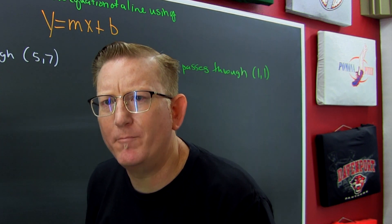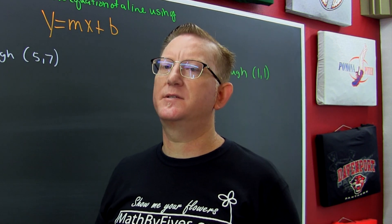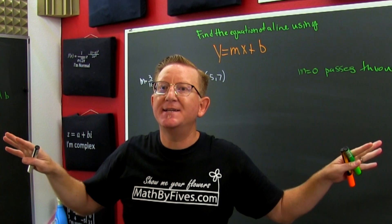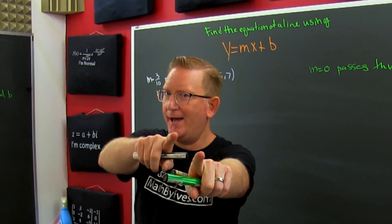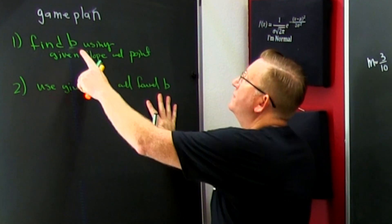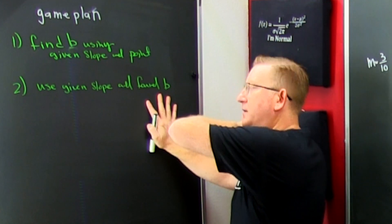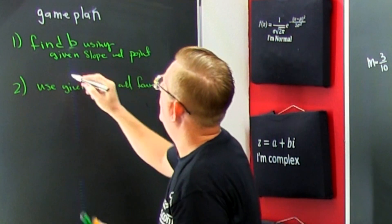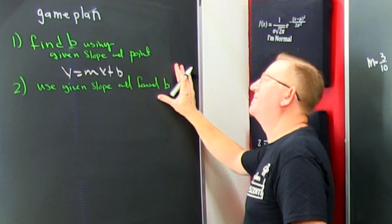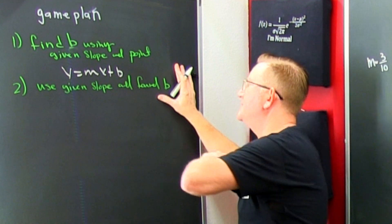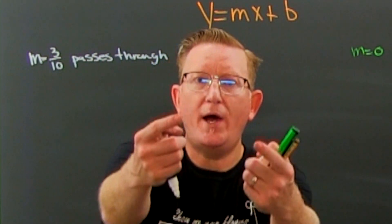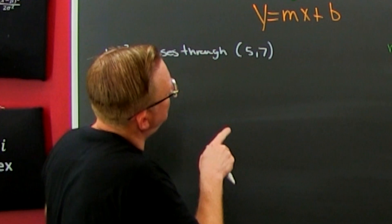We're using the backdoor method to find the equation of a line given a point and a slope. Relax, it's going to go a lot easier if you relax. We have a game plan. We're going to find our b using our given slope and points in the y equals mx plus b form. Once we find that b, we're going to use the slope and the found b for the equation of a line in y equals mx plus b.